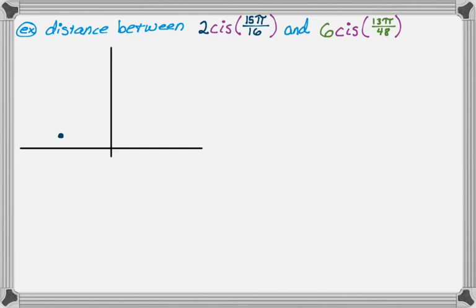And then our second complex number is 6cis(13π/48). So 13π/48, 12π/48 would be π/4. This is a little more than π/4. And then I have to be 6 units away from the origin. And again, I'm not super concerned with that, but I'm going to make it look like it's further away than the other one. So let's say there.